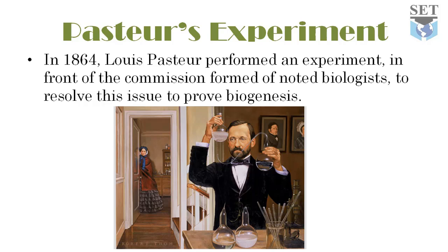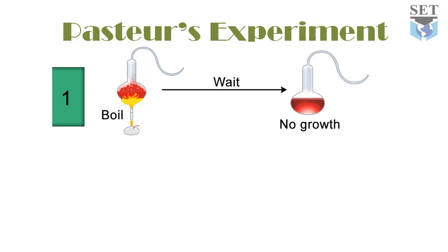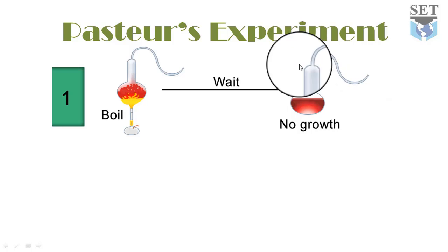He took flasks with long curved S-shaped necks. He added fermentable infusion — that is, yeast plus sugar plus water — into the bottles and left their mouths open. The yeast infusion was boiled in the flask and steam was allowed to release out of the neck. Then the flasks were allowed to cool down. No life was produced even after several days, because microorganisms entering with incoming air got stuck in the curved walls of the glass neck and could not reach the infusion.